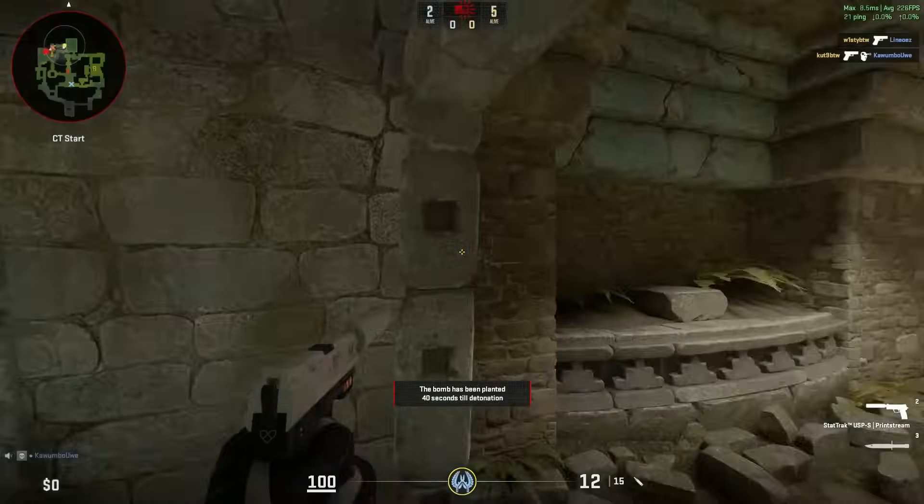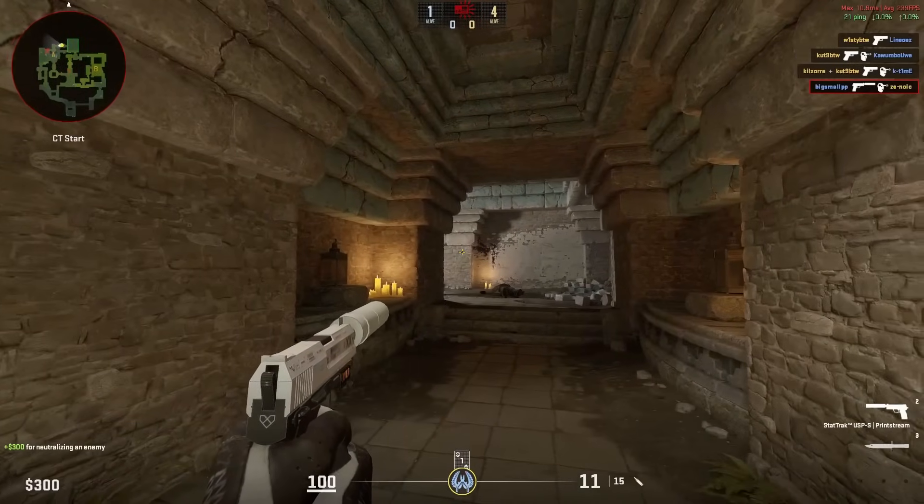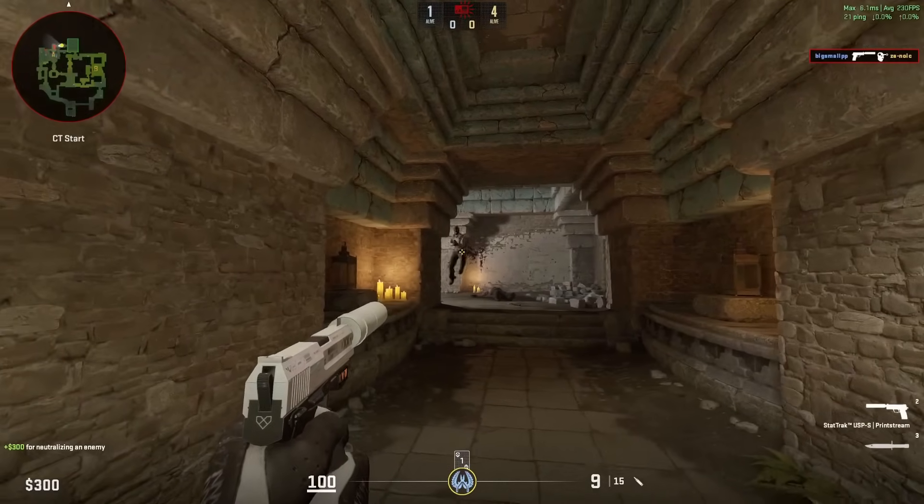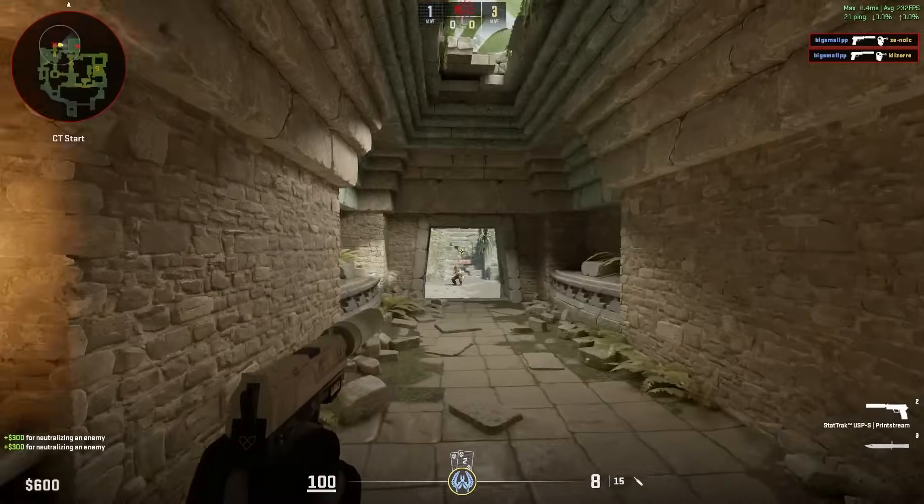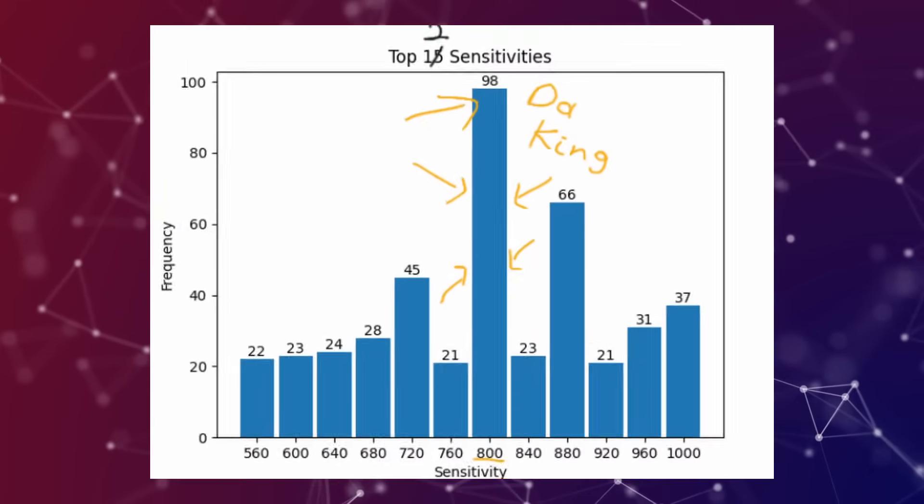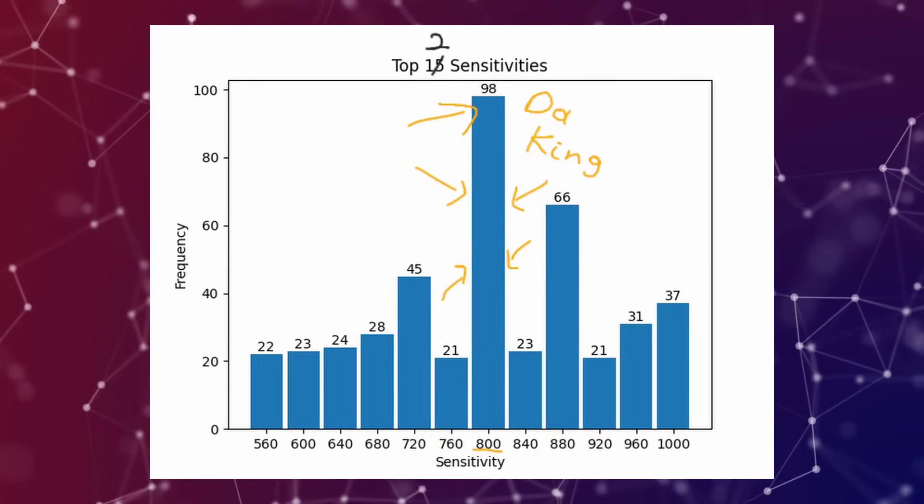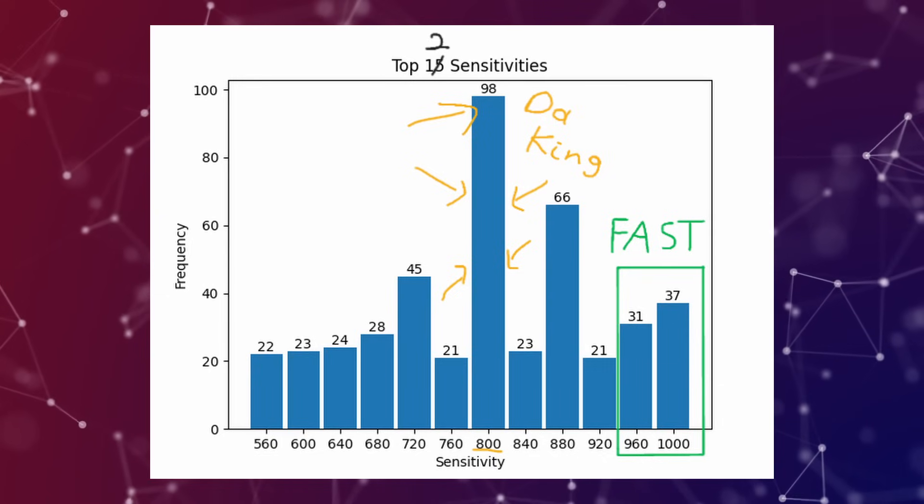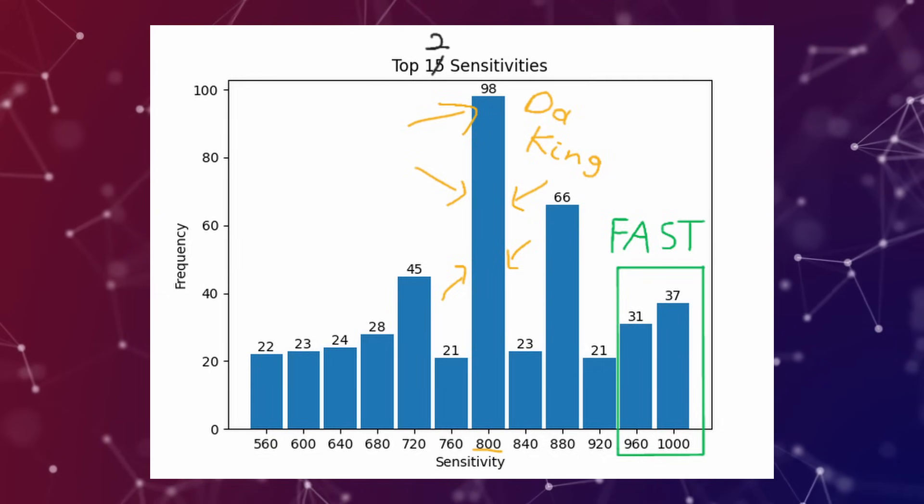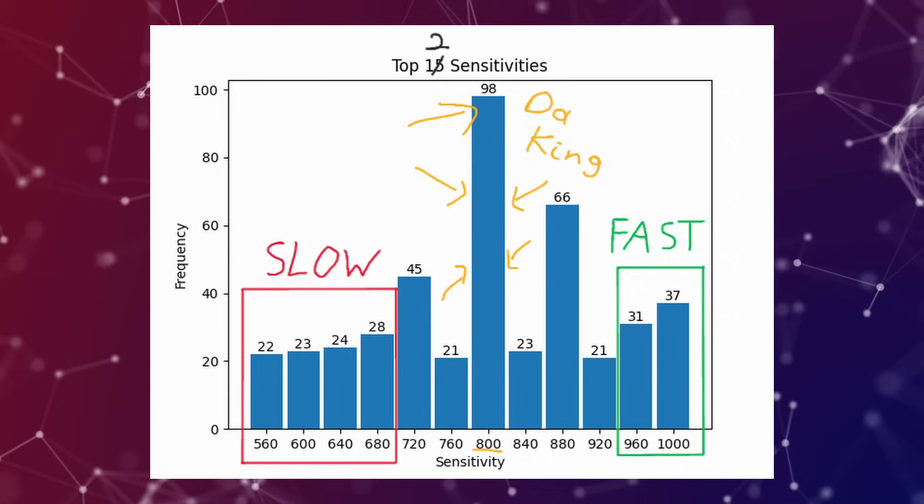In the end, what we can take away from this little adventure is that any sensitivity higher than 560 and lower than 1000 effective DPI are the most frequently used ones, where 800 eDPI seems to be the overall sweet spot. Players coming from higher sensitivities seem to stick with 960 and 1000 eDPI respectively, while for lower sensitivities there is a more even distribution and no apparent hotspots.